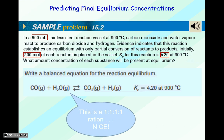Now predicting final equilibrium concentrations. In a 500-milliliter stainless steel reaction vessel at 900 degrees Celsius, carbon monoxide and water vapor react to produce carbon dioxide and hydrogen gas. Initially, 2.00 moles of each reactant is placed in the vessel. The equilibrium constant for this reaction is 4.20 at 900 degrees Celsius. What amount concentration of each substance will be present at equilibrium? The balanced equation is CO + H2O → CO2 + H2 — it's a 1:1:1:1 ratio, which makes things easier.